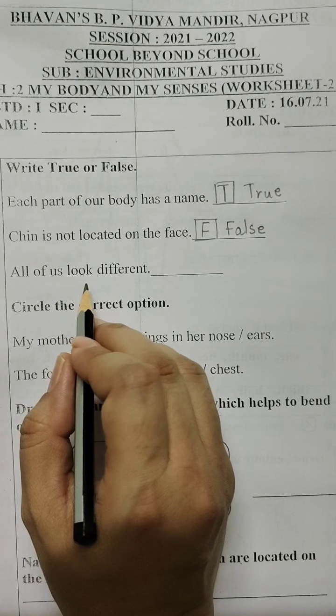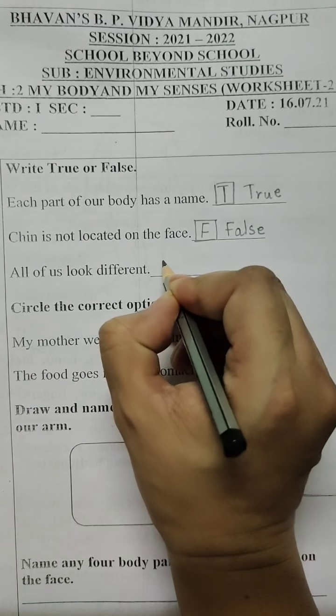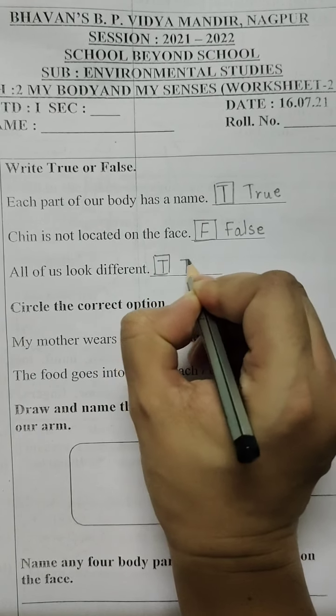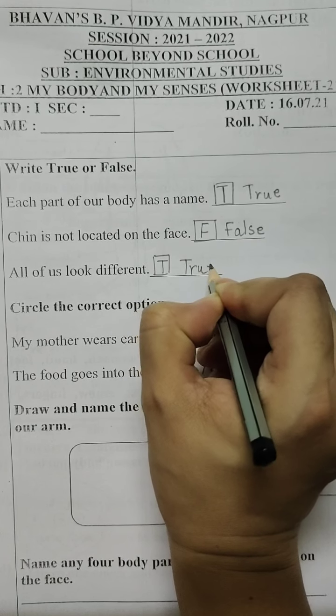All of us look different. Yes, it is absolutely true. Those who have a problem in writing the spelling, they can write T for true and F for false.